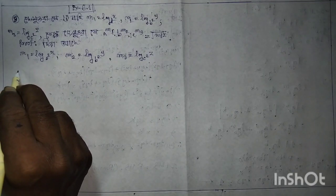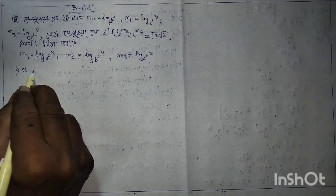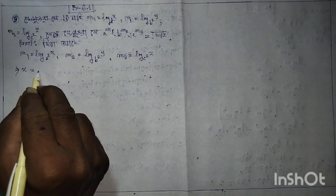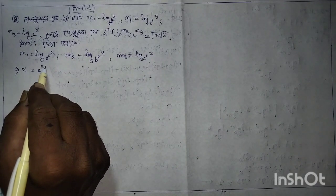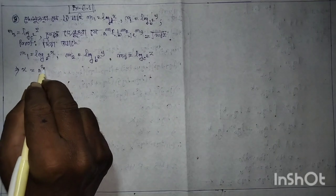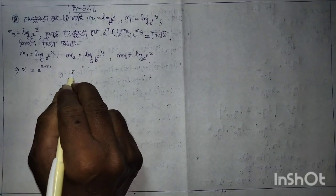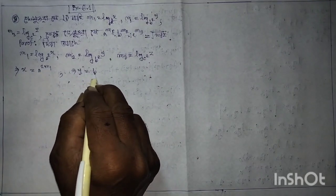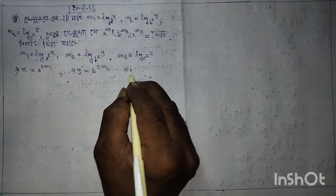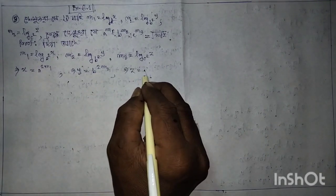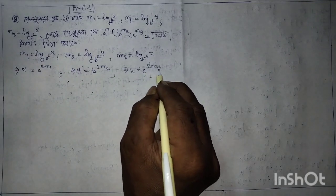m1 implies x is equal to a squared. That means twice m1 always equals b to the power twice m2, and z is equal to c to the power twice m3.